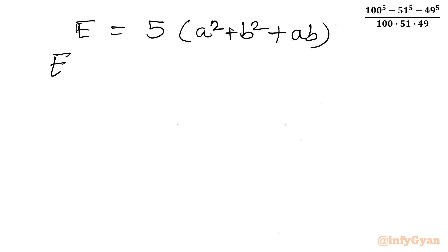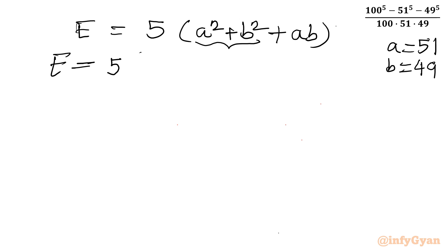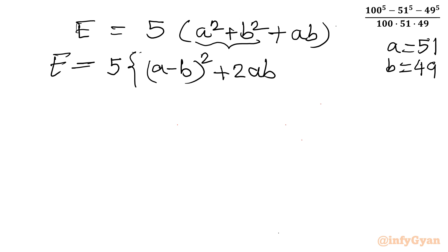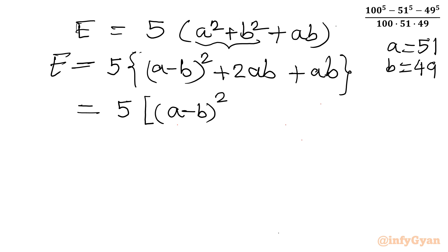E equals 5 times A square plus B square plus AB. Now can we write this in A minus B whole square form? Because we know A is 51 and B is 49, so A minus B is just 2, which is small. So let us convert: A square plus B square equals A minus B whole square plus 2AB. After that we still have the AB term, so we get E equals 5 times A minus B whole square plus 3AB.